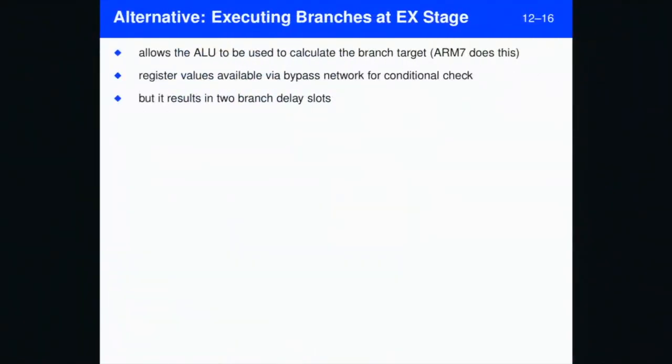The other thing we could do is execute branches in the execute stage. And in fact, a lot of ARM processors like the ARM 7 does this. This actually simplifies the forwarding logic because we're just forwarding to the execute stage. We don't need to forward anything to the branch stage, so we've already got that bypass network in place.